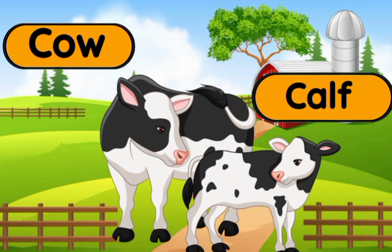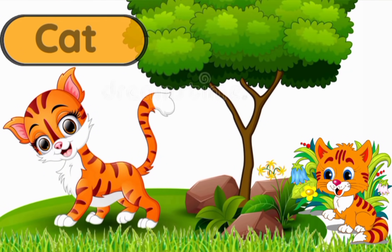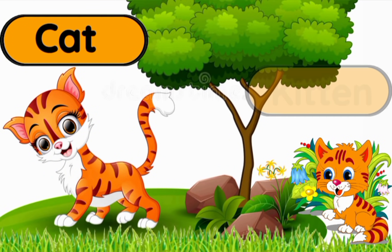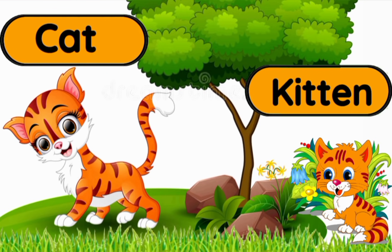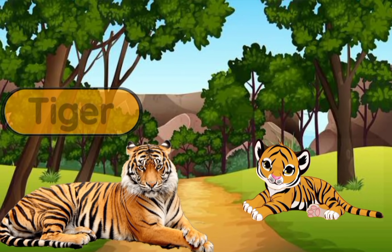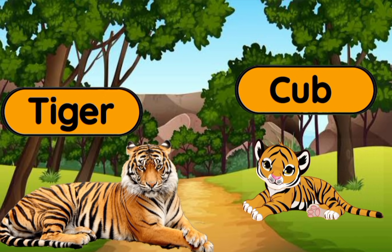Cow — a baby cow is called a calf. Cat — a baby cat is called a kitten. Tiger — a baby tiger is called a cub.